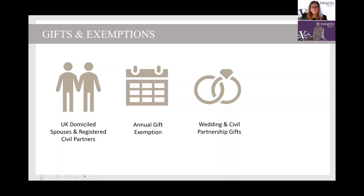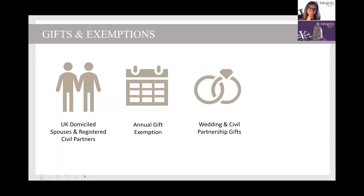You've also got wedding and civil partnership gifts. Depending on who you're gifting the money to determines how much you can give without inheritance tax implications. If it's your child, you can gift £5,000. If it's a grandchild, you can gift £2,500. And if it's anyone else, you can gift up to £1,000 — so if you're feeling generous at a wedding, you can gift £1,000 with no IHT worries.